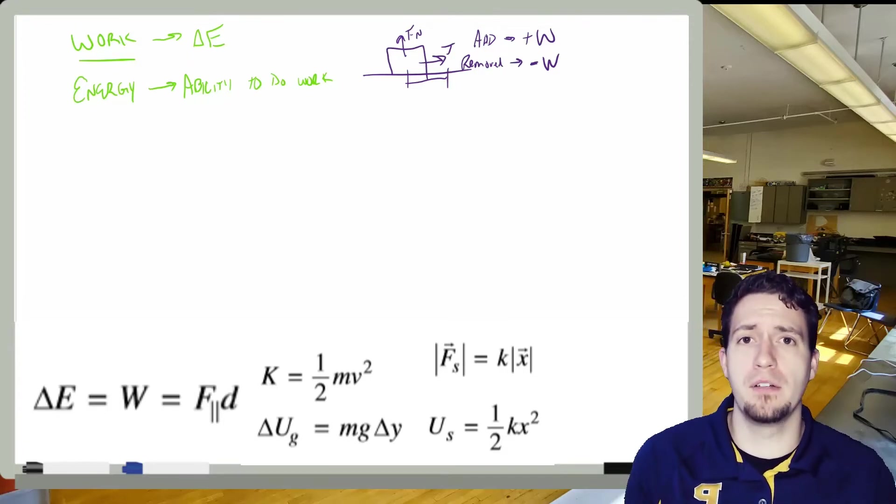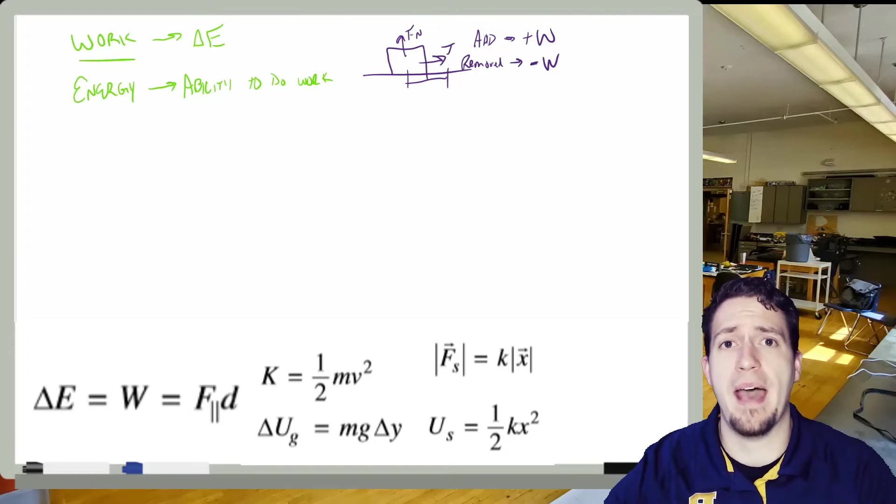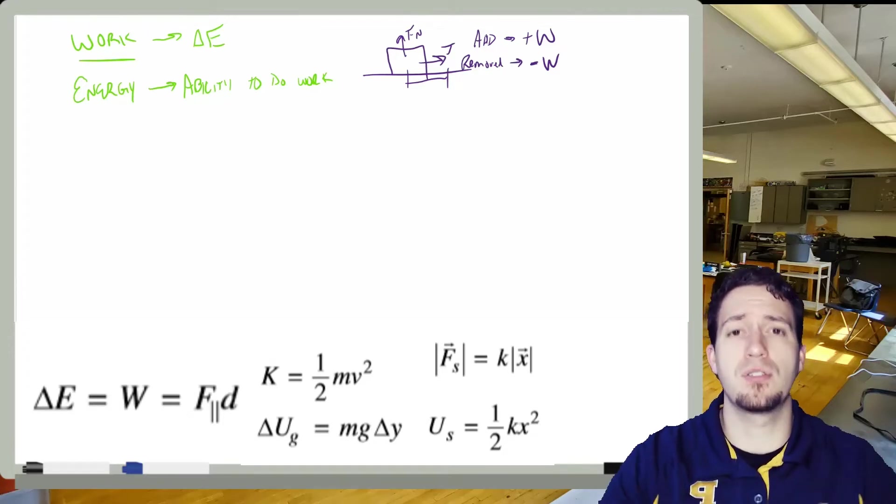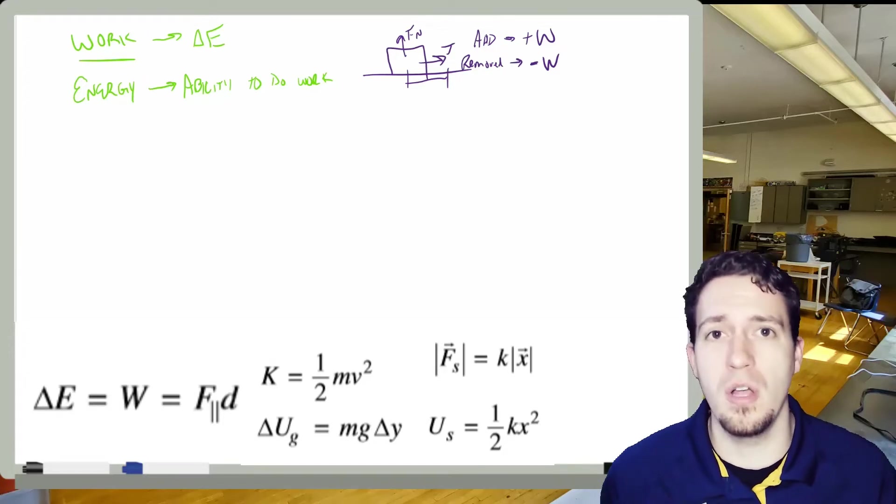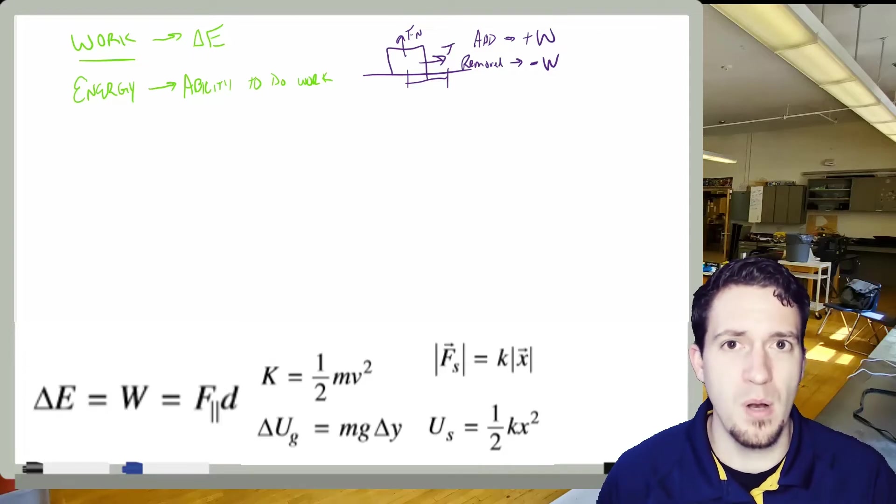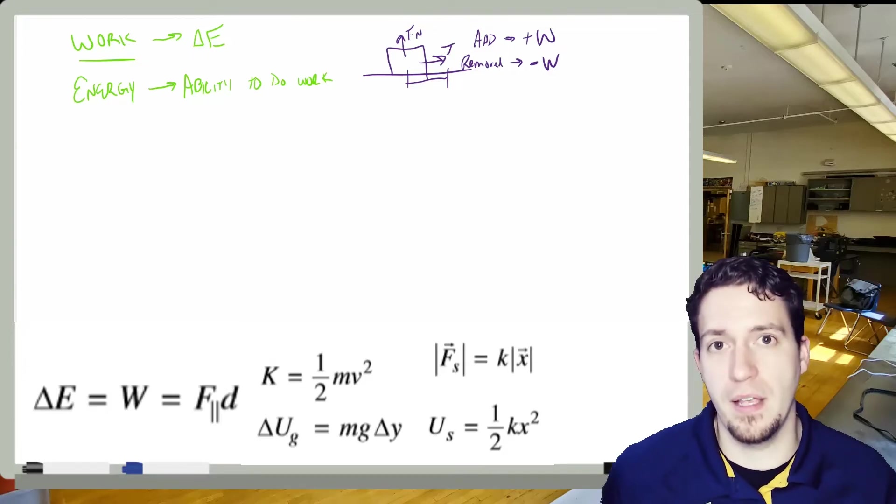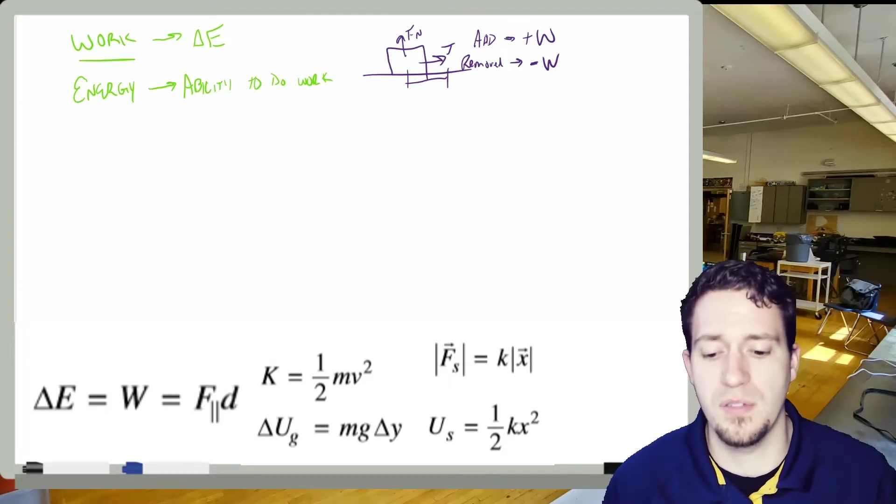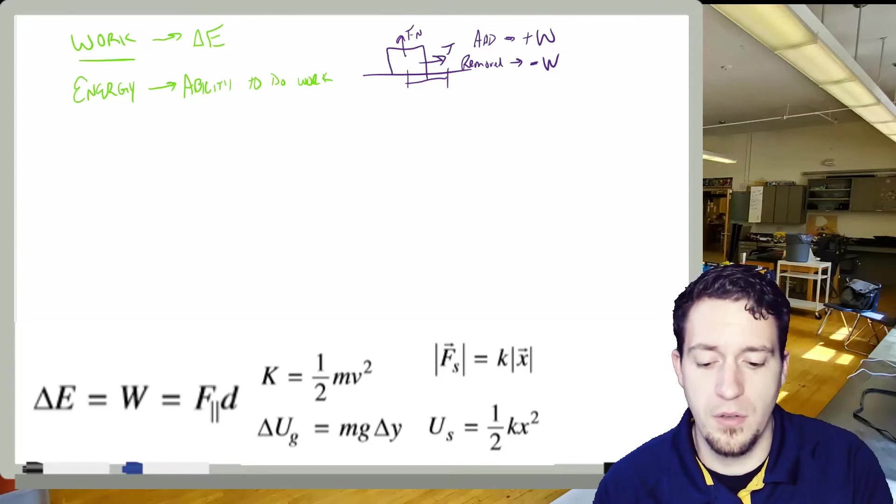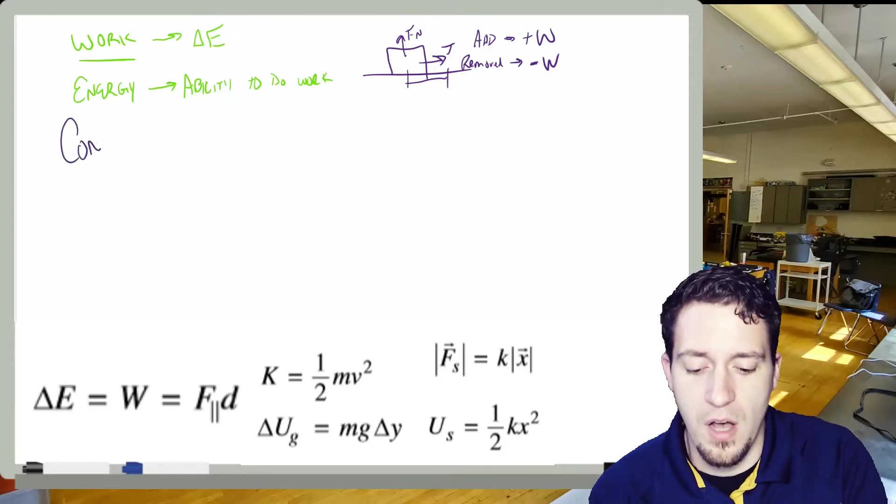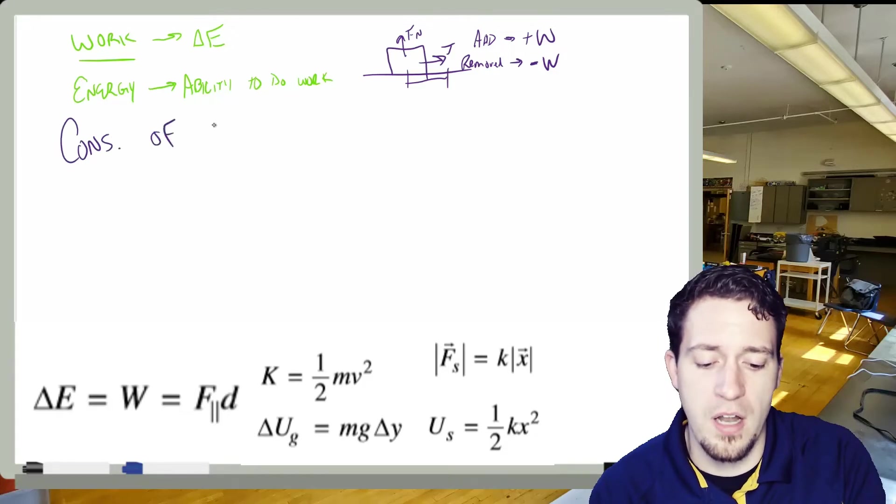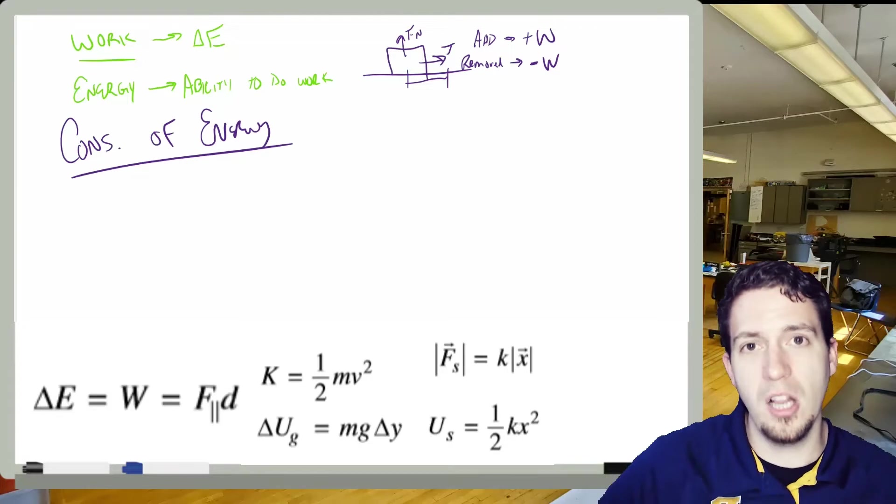Now, doing a work change in energy is typically what we do if we have an object that has something external acting on it, some external stimulus that is acting on it. But what happens if we don't have anything external? We're just sort of dealing with our system. This is where we get to one of the most foundational things that's super important for us, the conservation of energy. It's like a law or something.